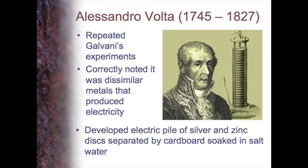The next person — and again his name is immortalised — is Volta, a fellow Italian, although Italy was lots of separate states back in those days. He looked at it in a little bit more detail and noted that it wasn't some living battery creating the current, but actually the dissimilar metals. He investigated further and found that it was those two metals joined together that was creating the electricity. He investigated a few other metals and found that joining silver and zinc gave quite a large current.